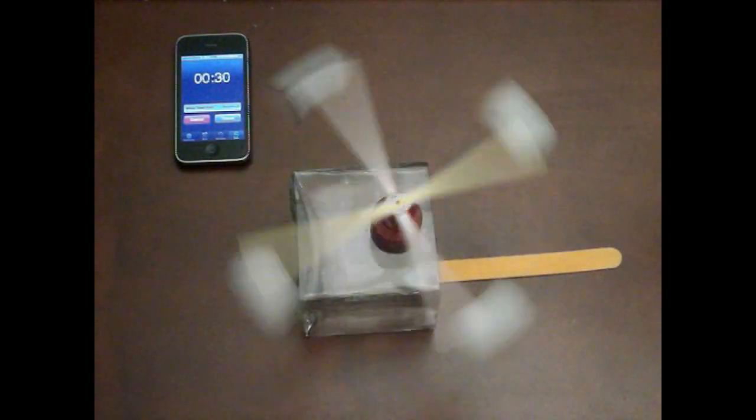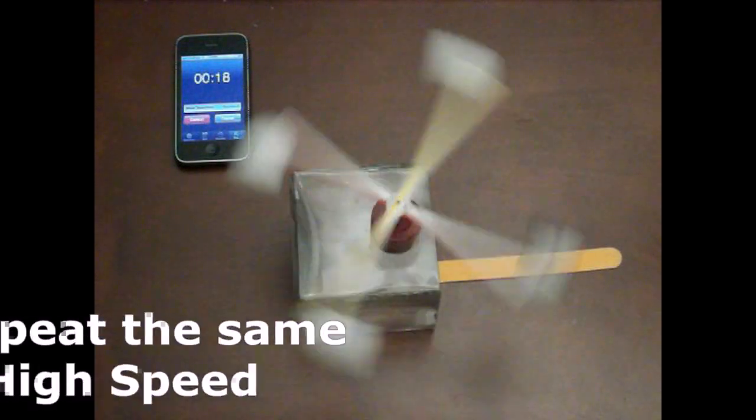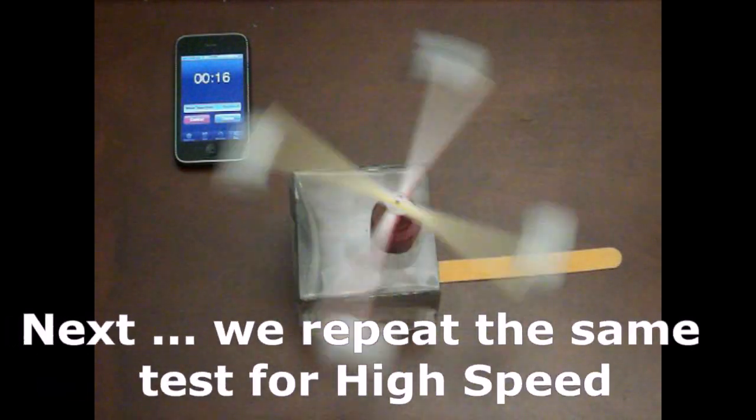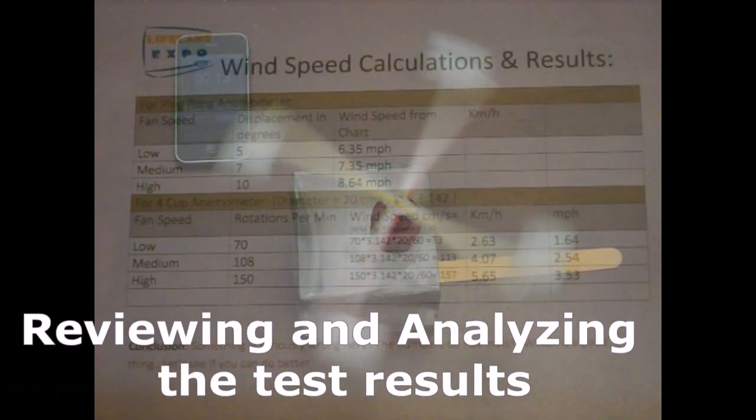I am not going to ask you to do that, but I am going to do that to count the number of times that the black cup that is marked with the black marker passes over the popsicle in one minute. This is for the medium speed.